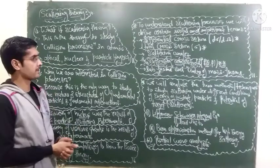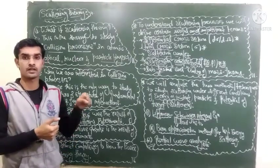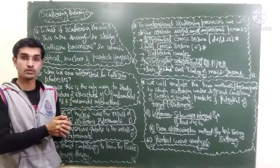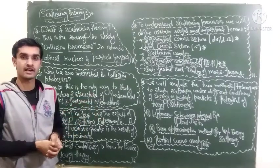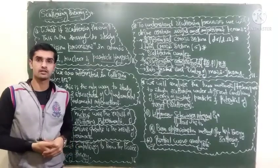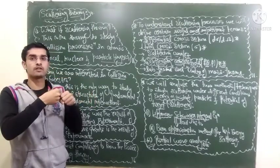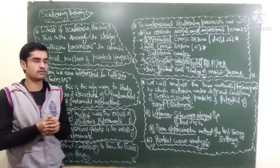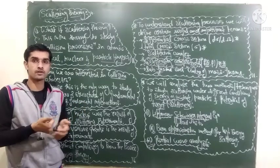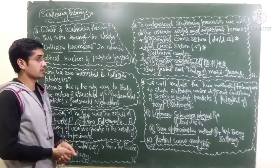Let me give a hint about the lab frame and the center of mass frame. In the lab frame, you have a target which is at rest and you are throwing projectiles at it, observing the scattering results. In the center of mass frame, the two particles collide at the center of mass of the system. The benefit of using the center of mass frame is that the angular momentum and linear momentum of the system remain conserved before and after the collision, provided there is no external influence.